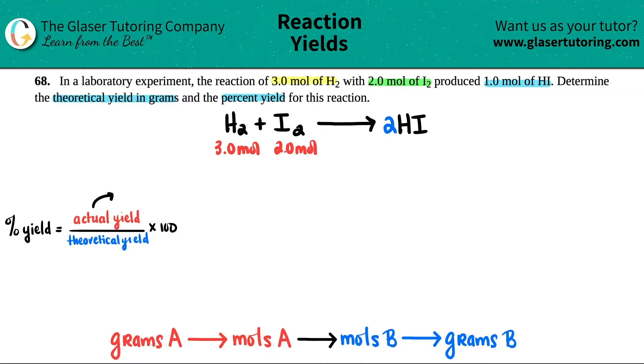So they told you that you have an actual yield of 1.0 moles. So basically if we need to find the percent yield, we need to find what that theoretical yield is. And the units have to match. So if you have mole of HI on the top, you should have a mole of HI on the bottom. So technically from these two, you have to find out how many moles of HI could you have produced. But here's the problem. What number do I take? Do I take the 3 moles of H2 and go to the moles of HI? Or do I take the 2 moles of I2 and go to the moles of HI?